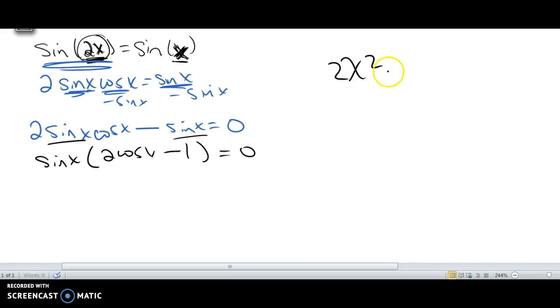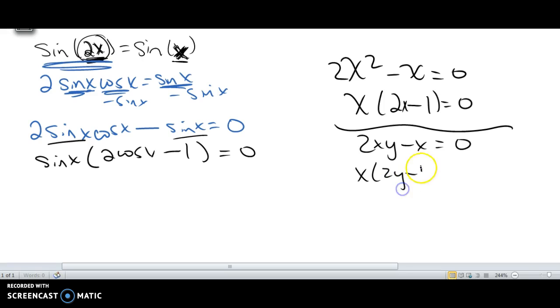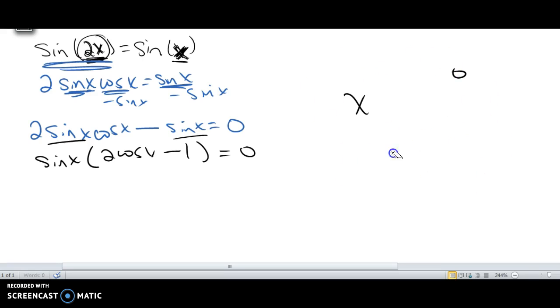The equivalent in algebra would be if you had something like 2xy minus x equals 0, you take out the x and you get 2y minus 1 equals 0. You have two different things going on and you're trying to get them apart from each other so that you can actually solve.